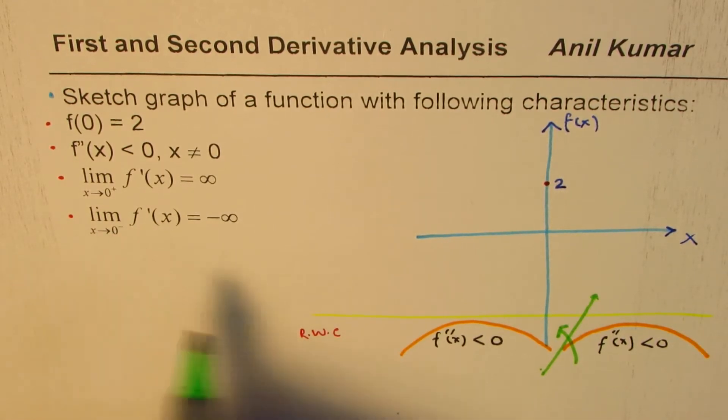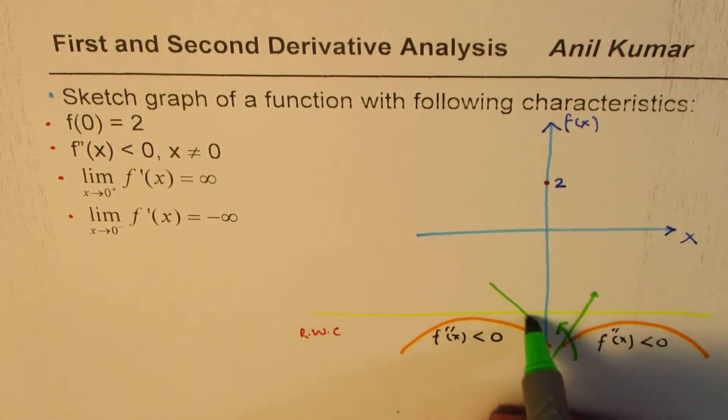And when you approach 0 from the left side, that is from this side, then it is going downwards.